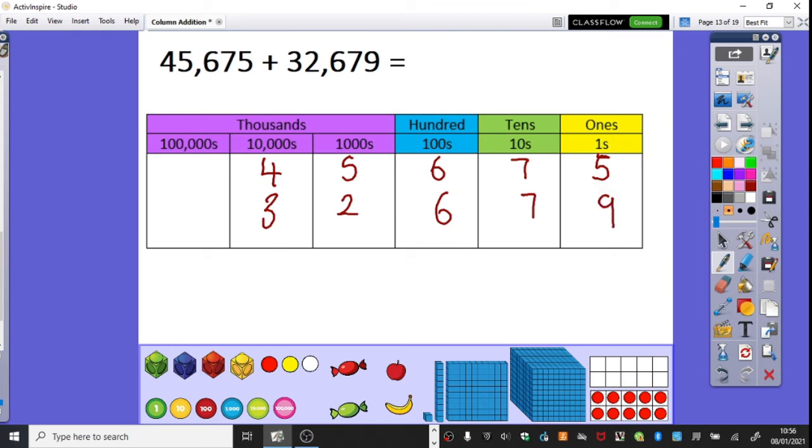So we have 45,675 add 32,679. So the first thing we're going to do, I'm going to do that up here in our, how it will probably more likely be laid out in your books, we run those alongside.